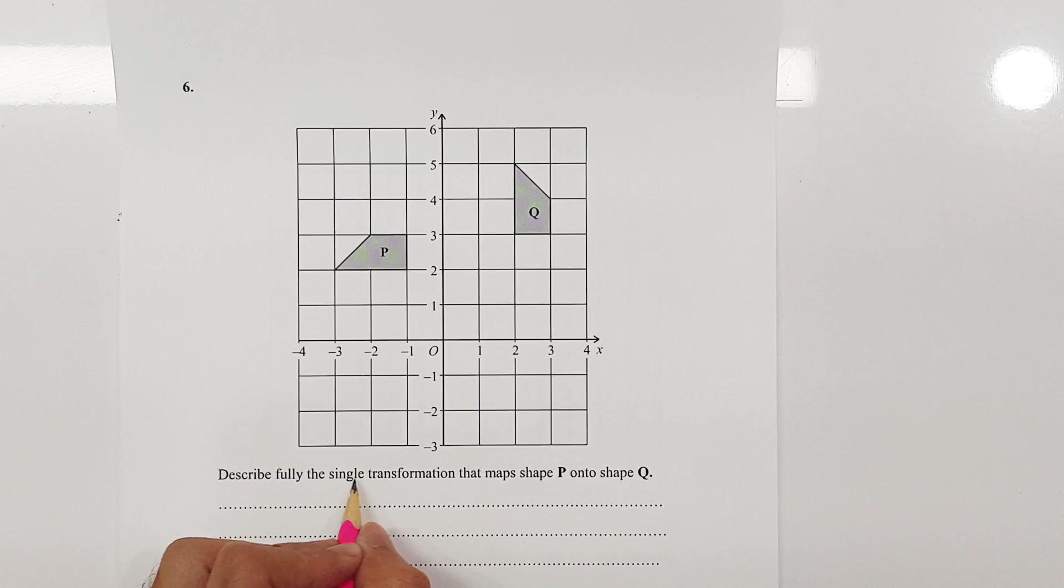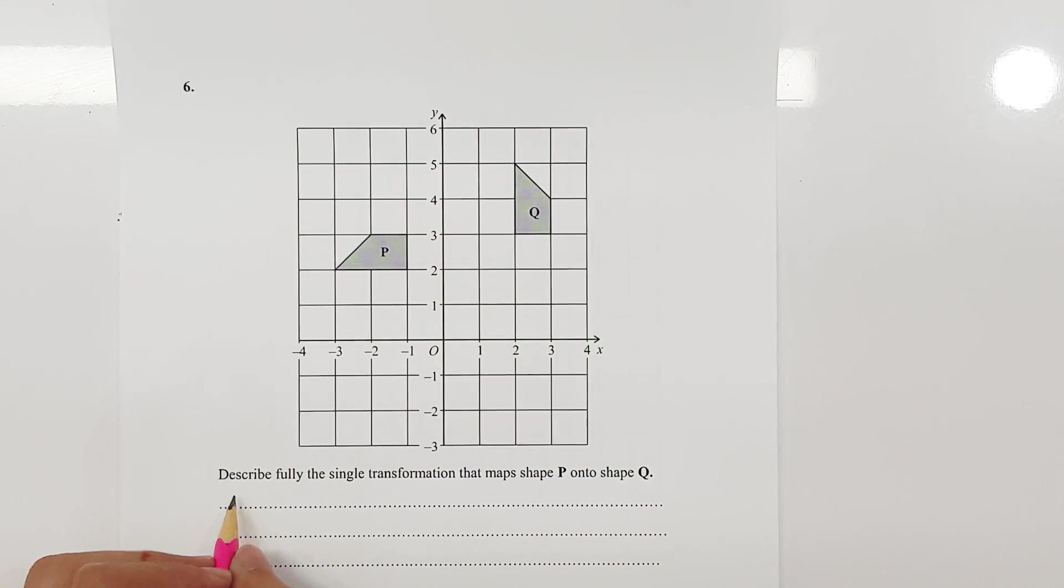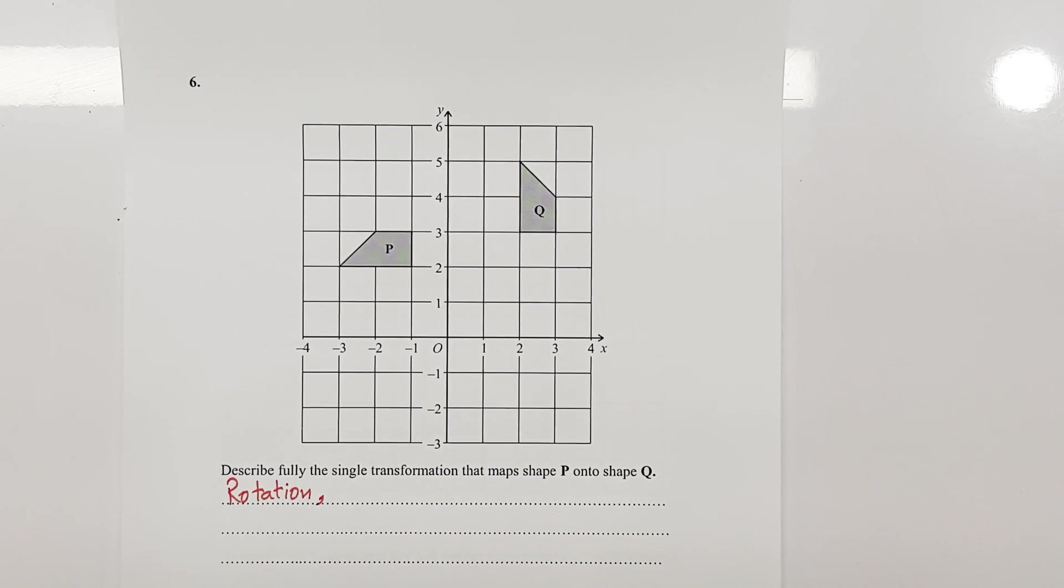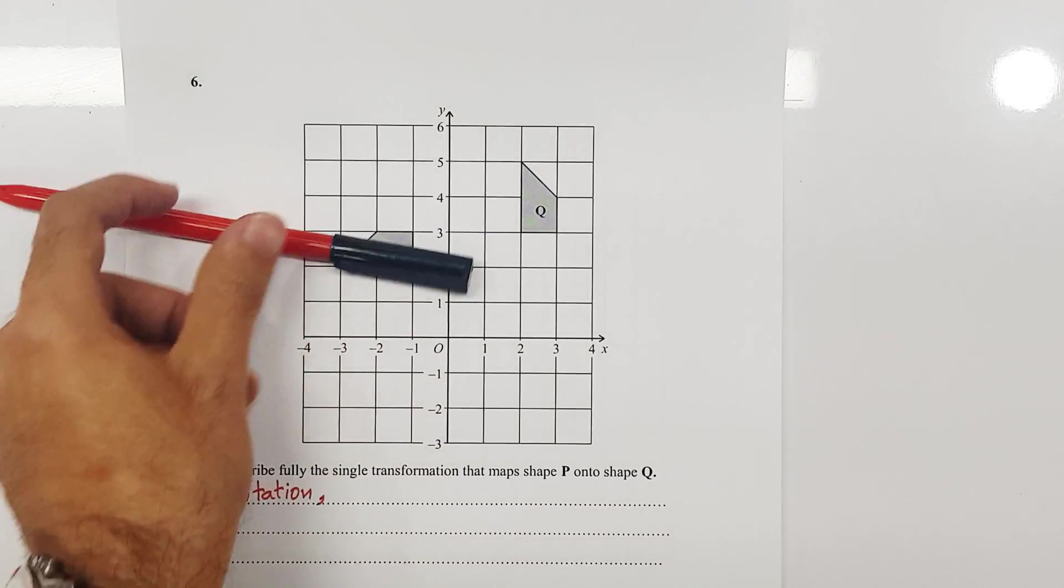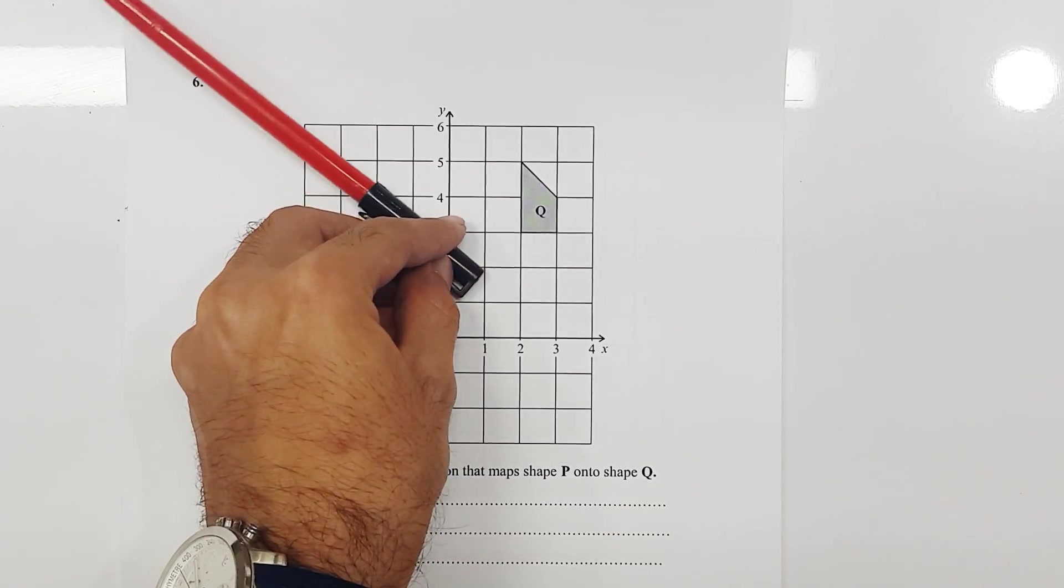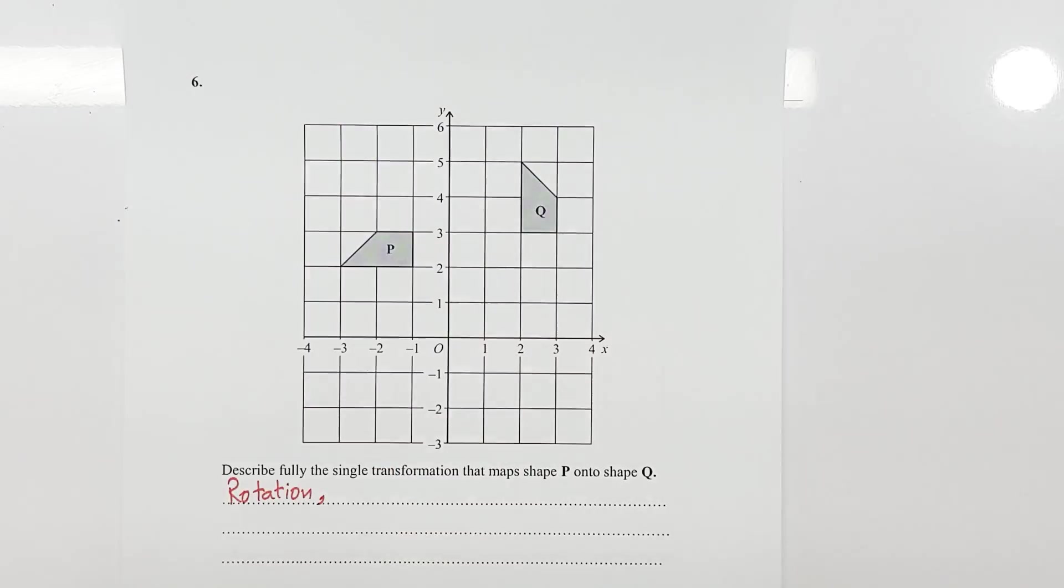Now the first thing you want to do is first write down what transformation this is. Well I just told you since we're finding the center of rotation obviously it can only be rotation. So I'm going to write down rotation here. And the next thing you want to do is whenever you state rotation obviously you need to be more specific in the sense that whether it's 90 degree, 180 degree and whether it's clockwise or anticlockwise. So this right here if you observe P has gone onto Q. So this is 90 degree.